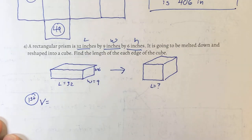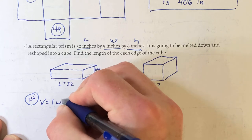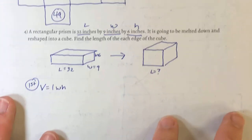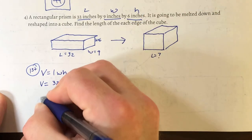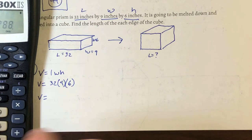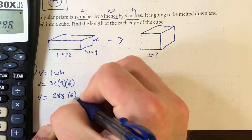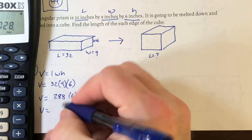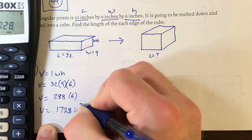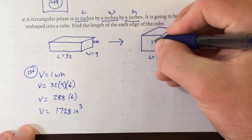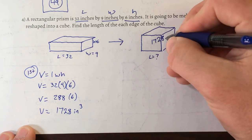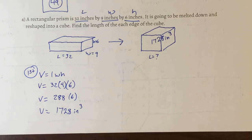Using V equals length times width times height — this works for rectangular prisms and cubes only. Volume equals 32 times 9 times 6. 32 times 9 is 288, times 6 is 1,728 cubic inches. That's the volume of the rectangular prism, and it's also now the volume of the cube since matter was neither created nor destroyed — we simply melted and reshaped it.